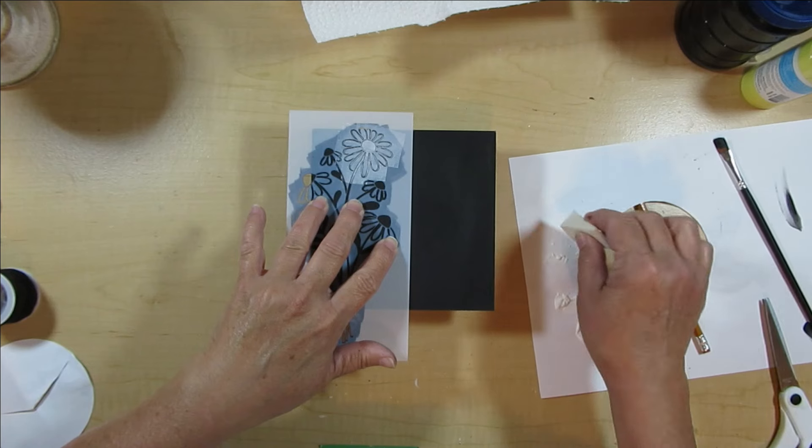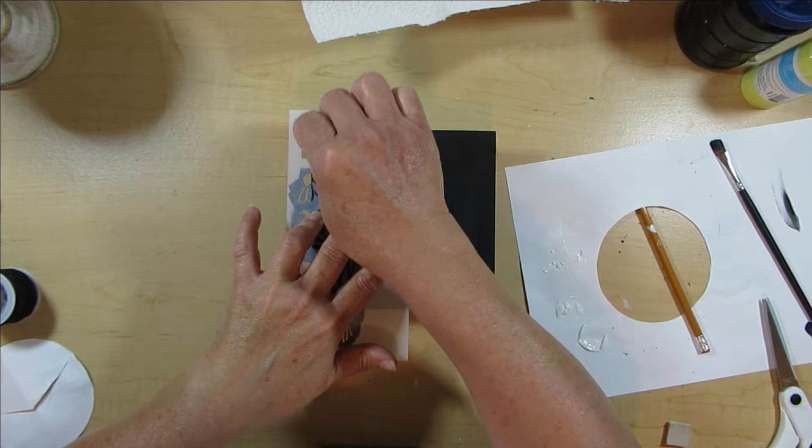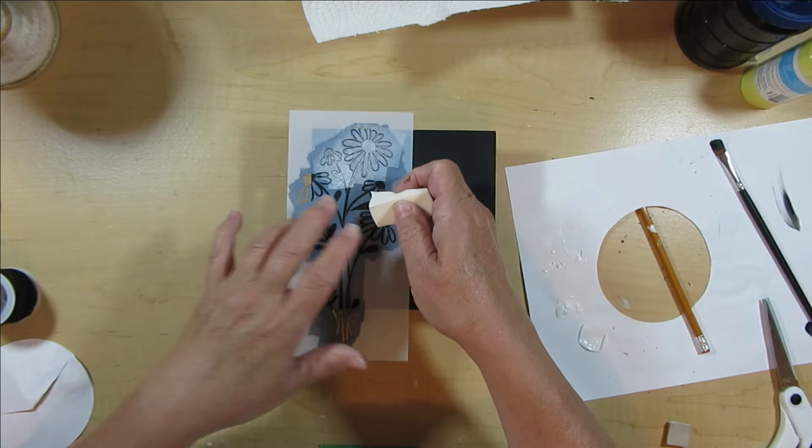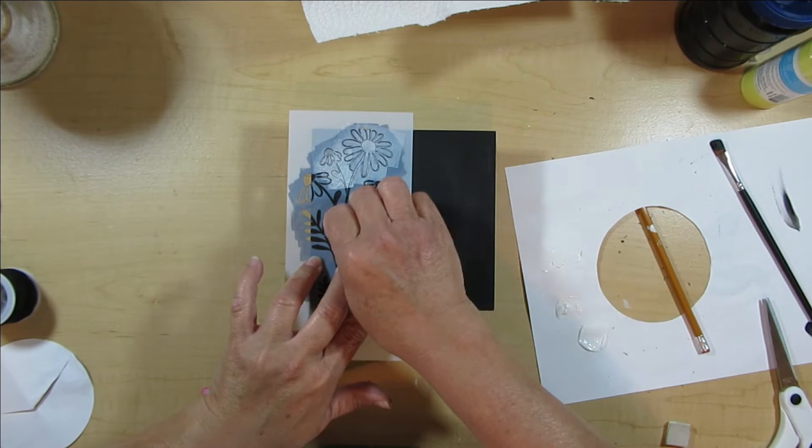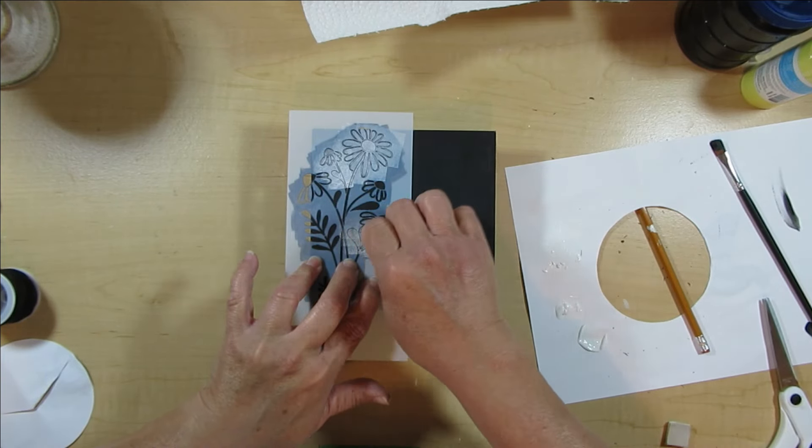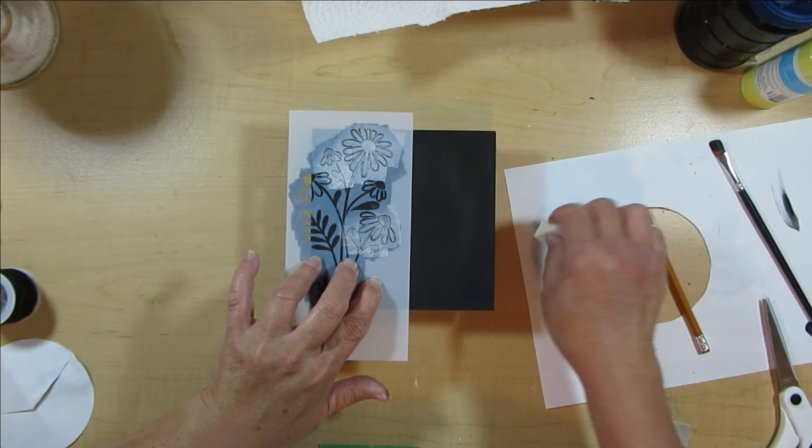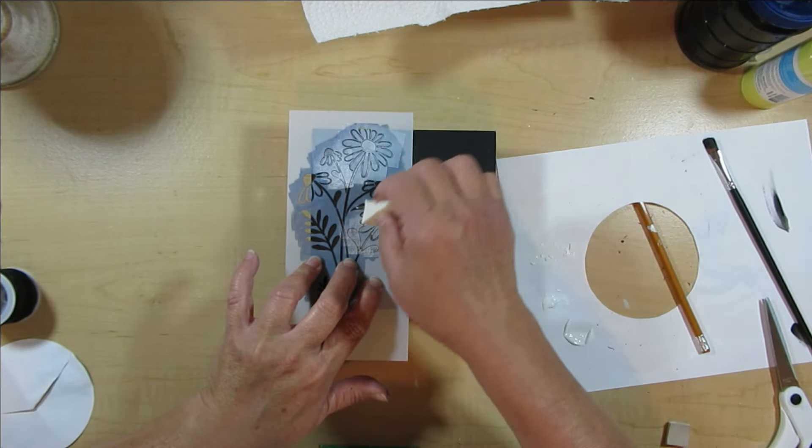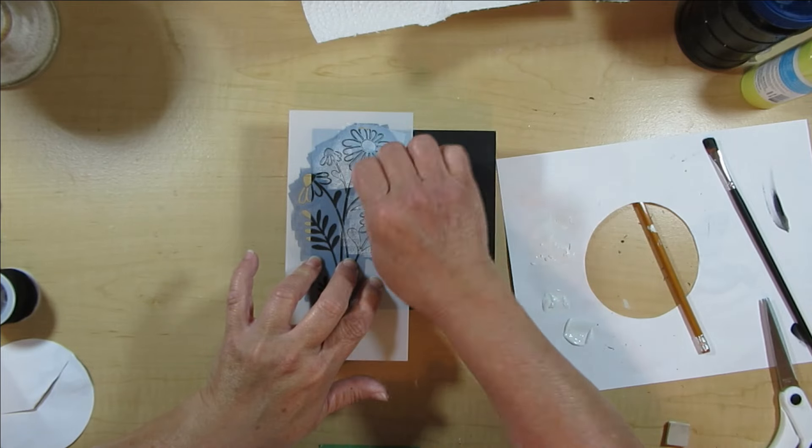I'm using a makeup sponge from the Dollar Tree with some white paint, just dabbing it off and making sure that I don't have too much loaded on the sponge and then just giving it a light tap all over the stencil. One coat was sufficient for this because I wanted it to look a little weathered and rustic.